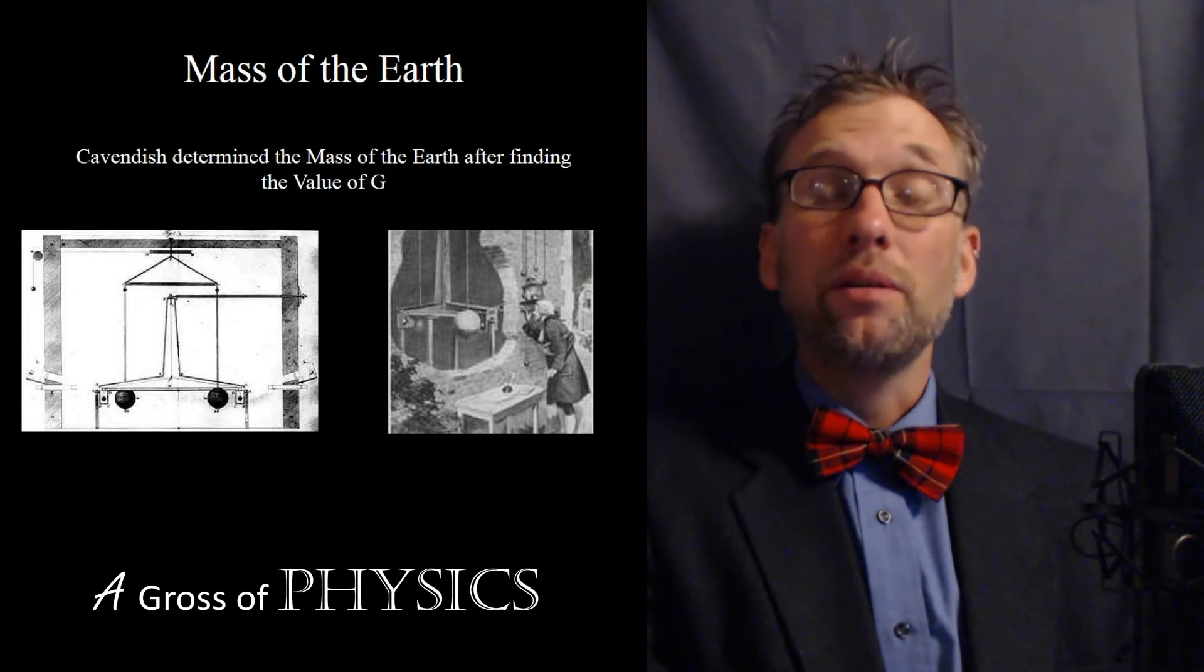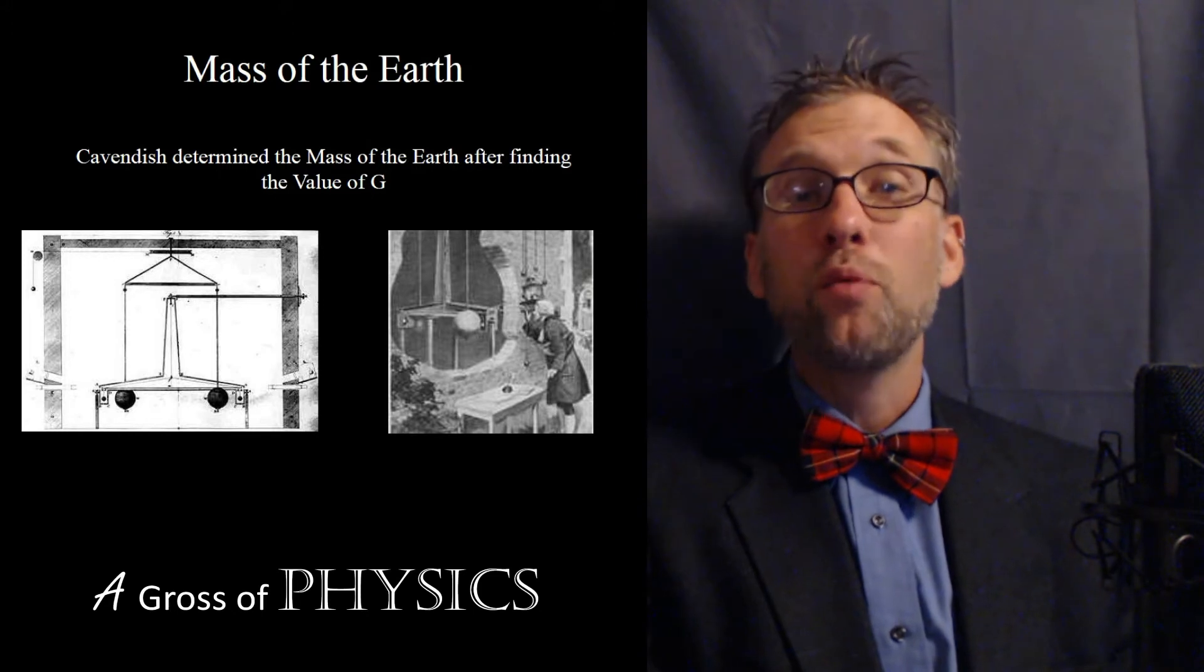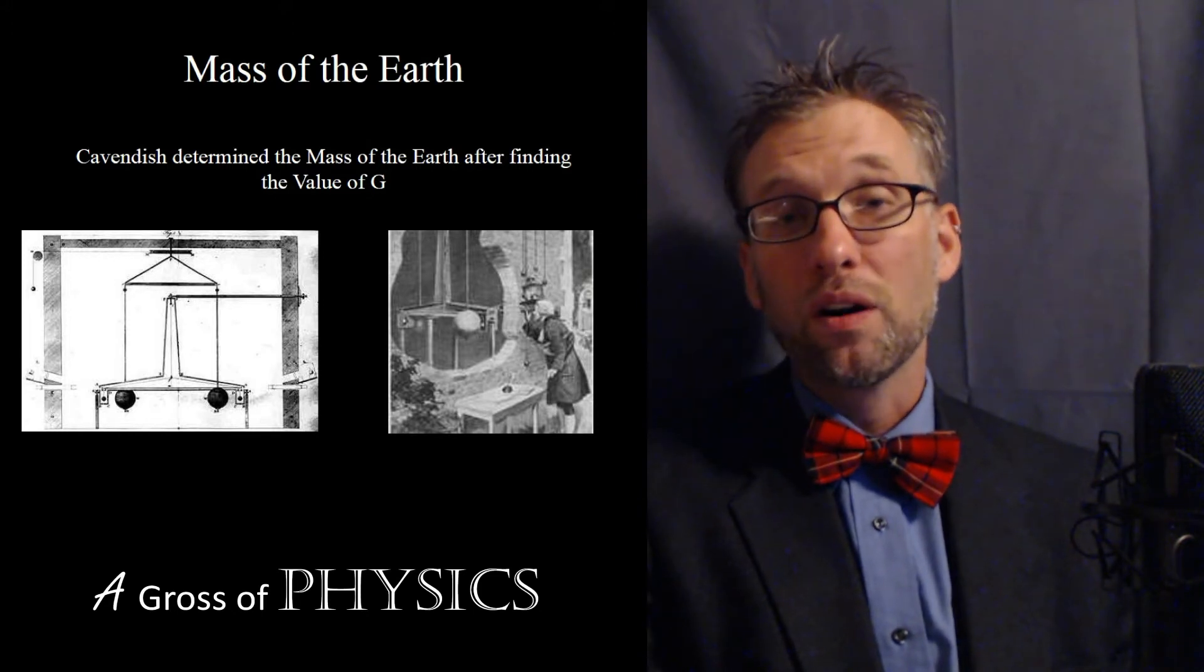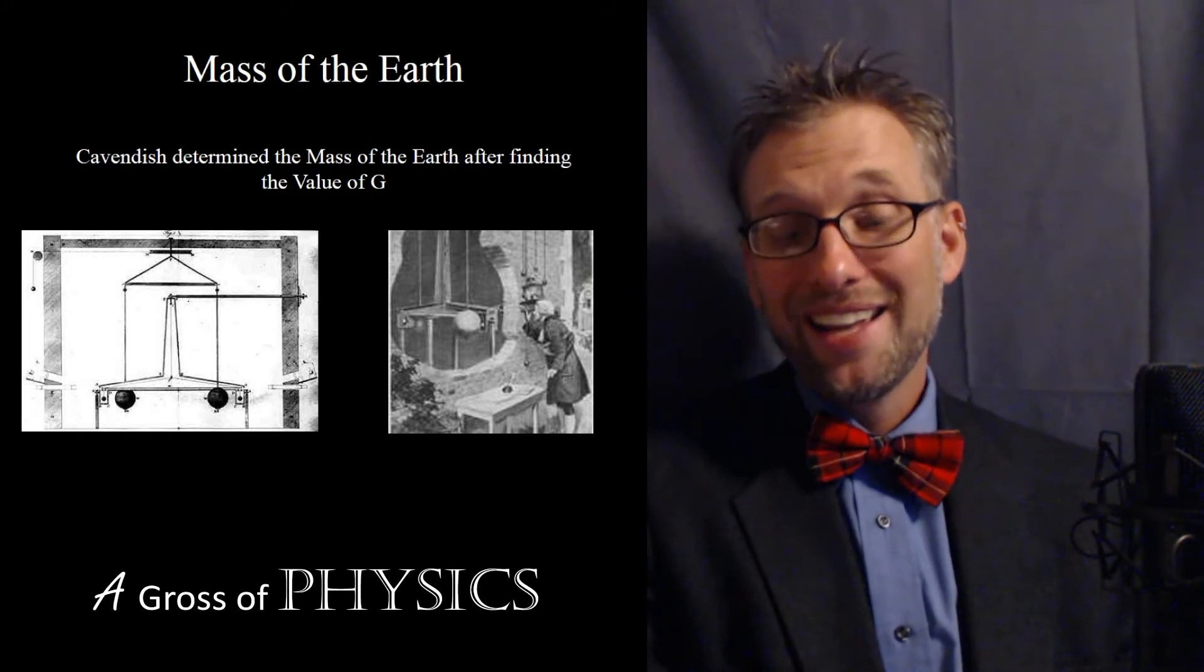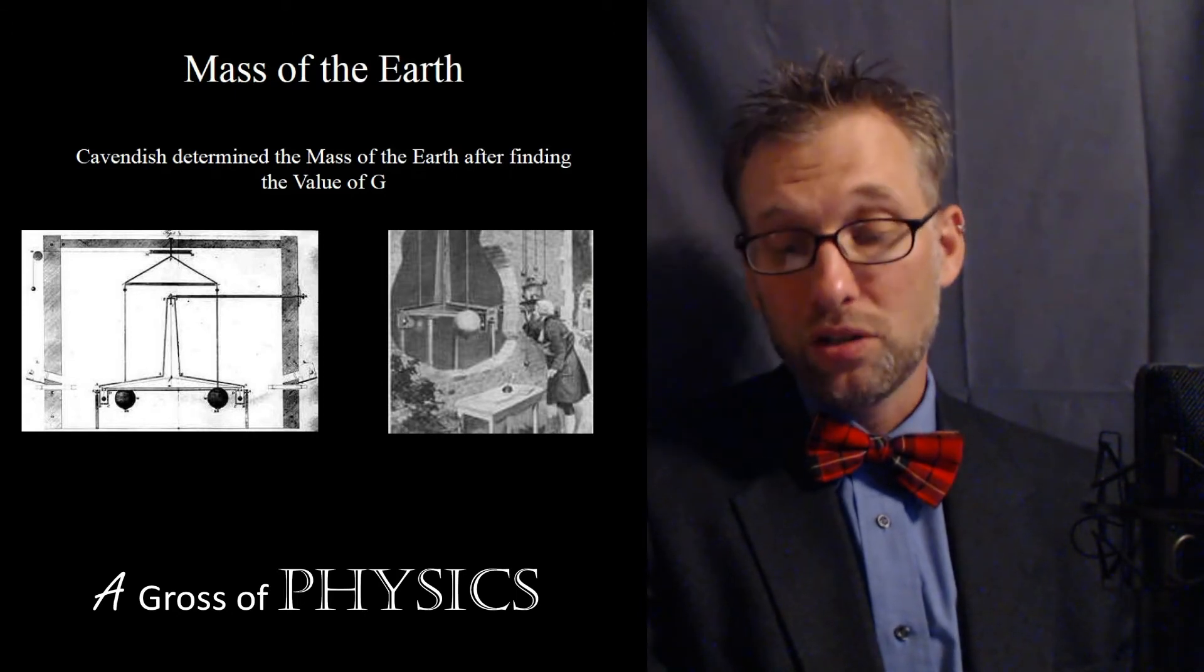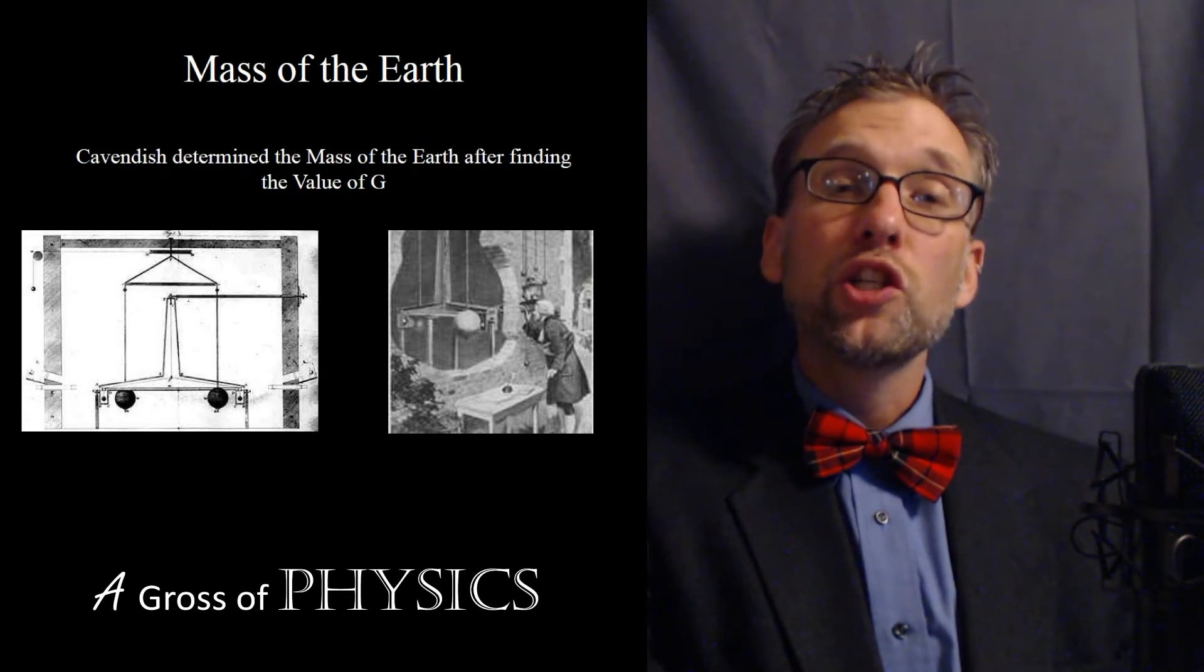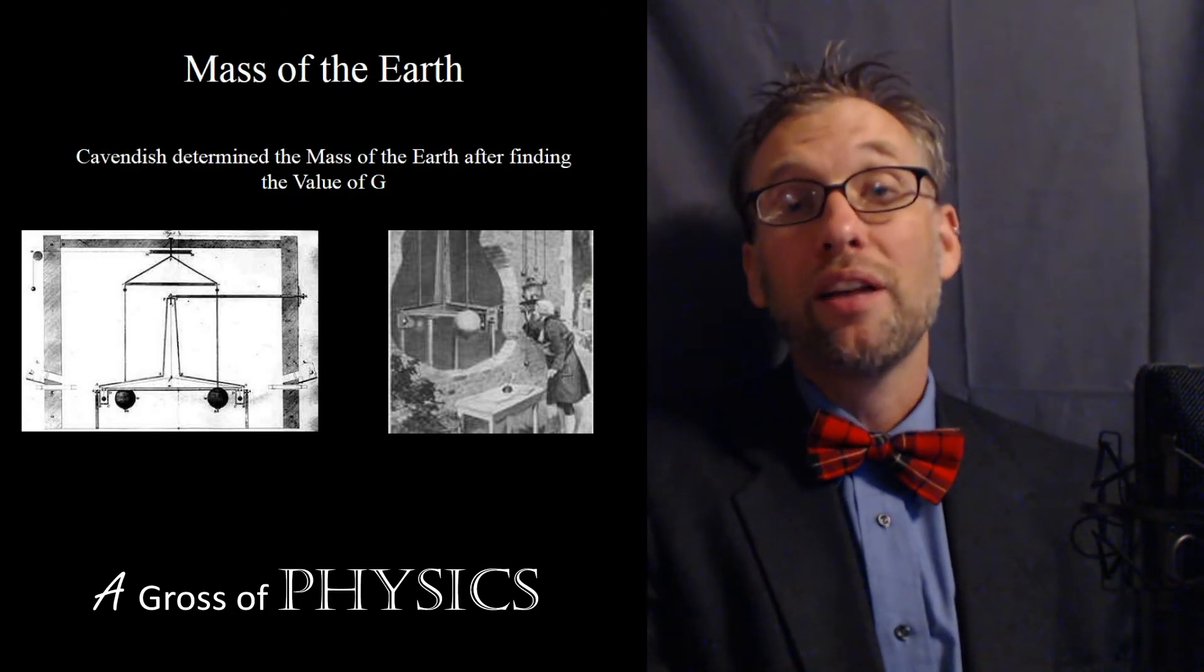He had to do this in painstaking detail but ultimately he was able to determine the value of G. Once that was found he was able to find the mass of the earth. The mass of the earth is 5.98 times 10 to the 24 kilograms, determined in 1798. Newton's law of universal gravitation was published in 1687, so there was just a proportionality for 111 years.